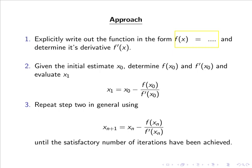Then given the initial estimate x0, we can determine f of x0 and f dash of x0 and hence evaluate x1 using x1 equals x0 minus f of x0 over f dash of x0. Then we repeat step 2 using xn plus 1 equals xn minus f of xn over f dash of xn until the satisfactory number of iterations or level of accuracy has been achieved.